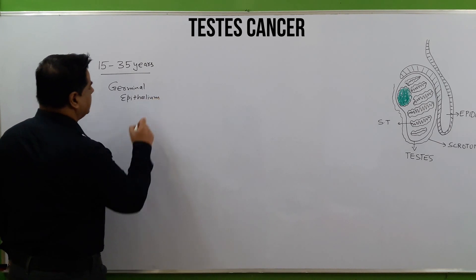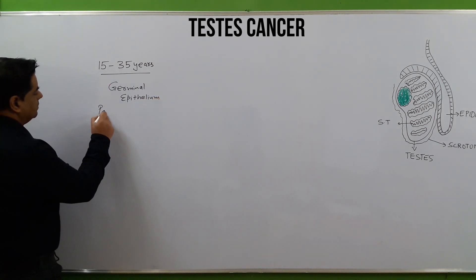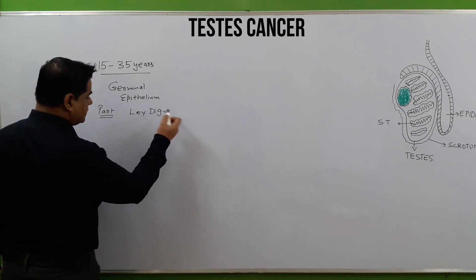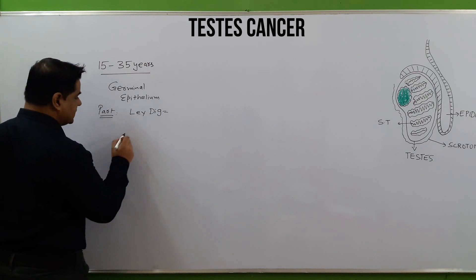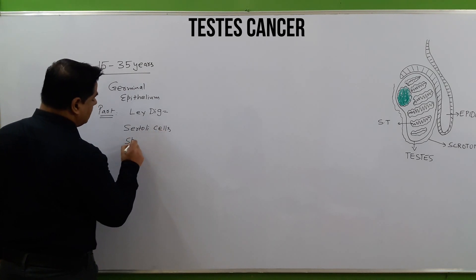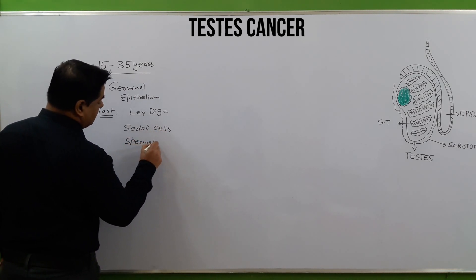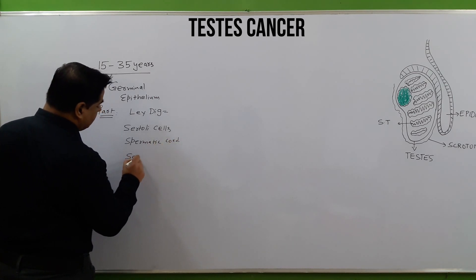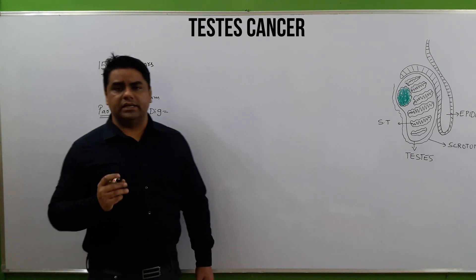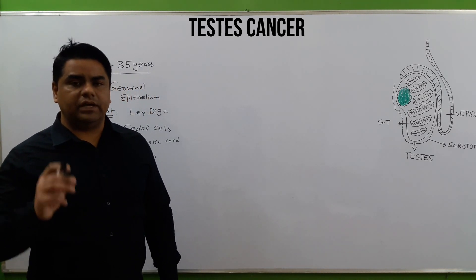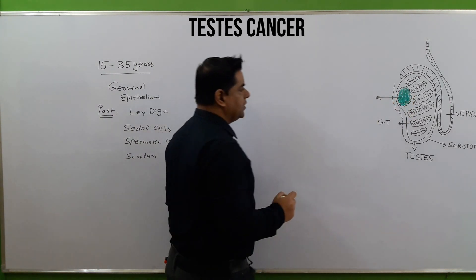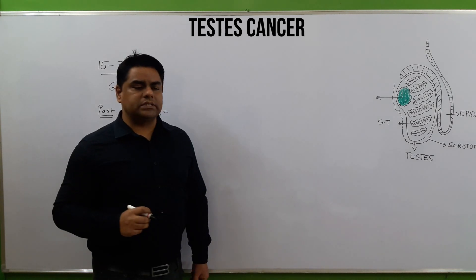It can also affect any part of the testes, including Leydig cells which produce testosterone and help in spermatogenesis, Sertoli cells, spermatic cord cells, the scrotum, and the cystic structures covering the testes. As shown here, the green structure marks the presence of the tumor.